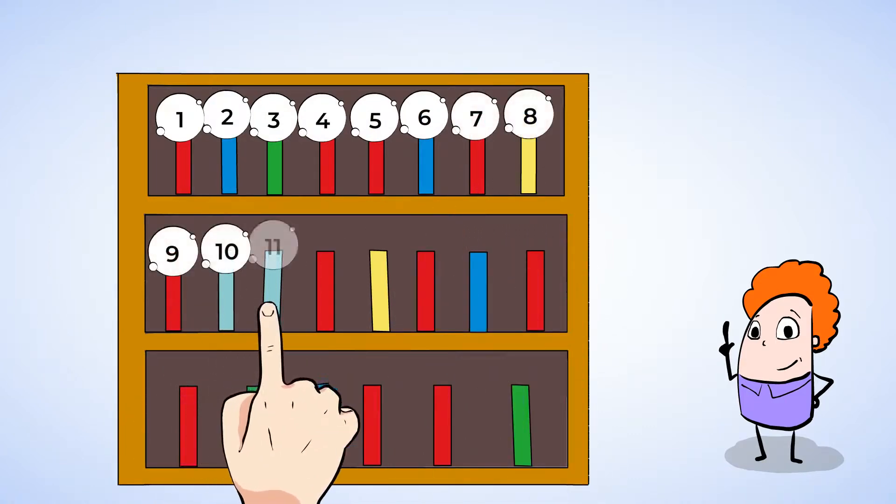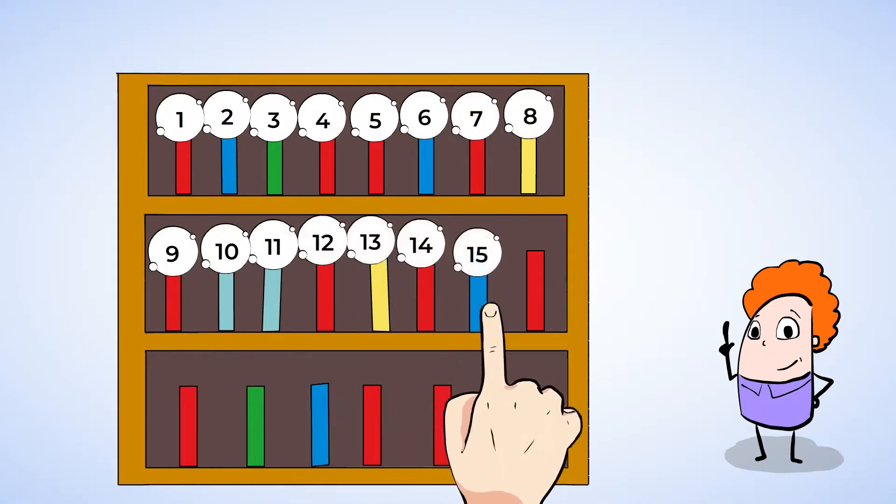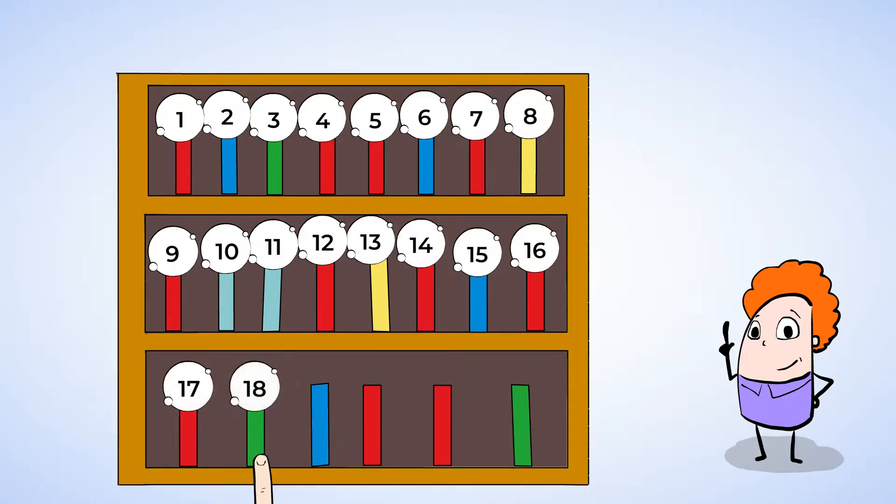Oh, so much counting today. Twelve, thirteen, fourteen, fifteen, sixteen, seventeen, eighteen, nineteen, twenty, twenty-one, twenty-two. There are twenty-two books on this shelf. Twenty-two was the last number we said while counting, and that's how we know we have twenty-two books.